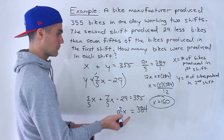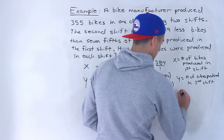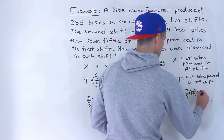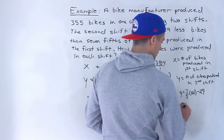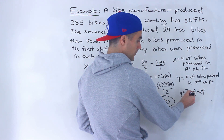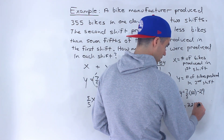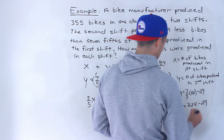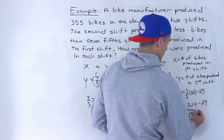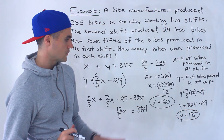To find the number of bikes produced in the second shift, we plug this x value in: seven over five times 160 minus 29. Seven-fifths times 160 — take 160 multiplied by 7 divided by 5 — gives 224. Subtract 29, and we end up with 195. That's the number of bikes produced in the second shift.